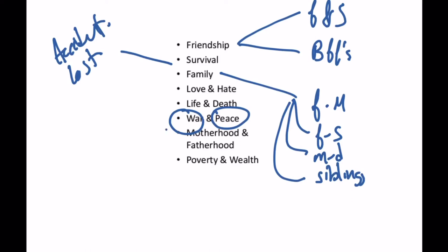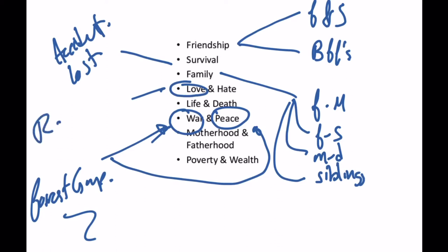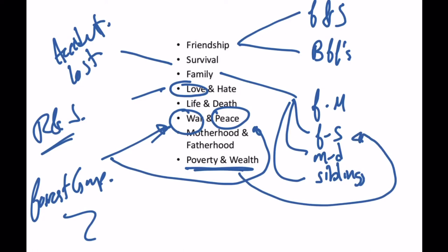For example, a movie with war and peace could be Forrest Gump — Forrest went to war but also experiences moments of peace. Love could be Romeo and Juliet. Poverty and wealth could be The Pursuit of Happiness, which also features a father and son relationship. So there are several ways to approach these themes through different stories.